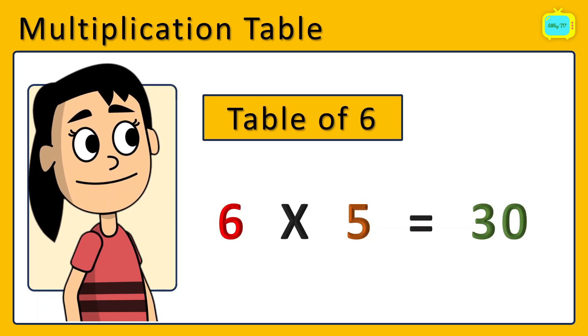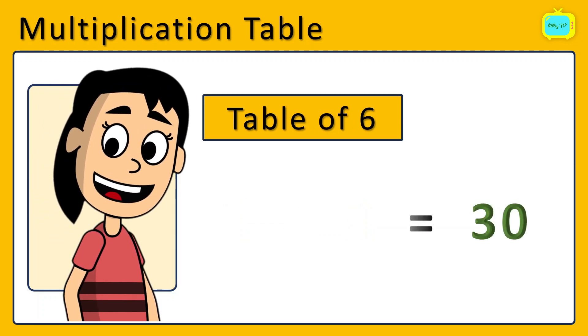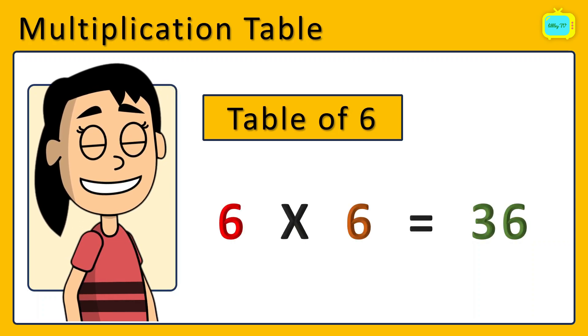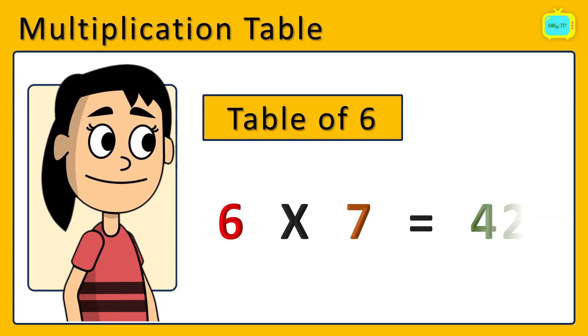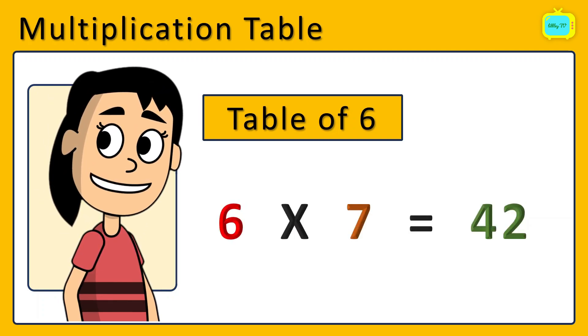6 5's are 30. 6 6's are 36. 6 7's are 42.